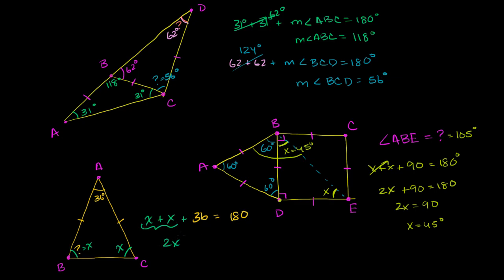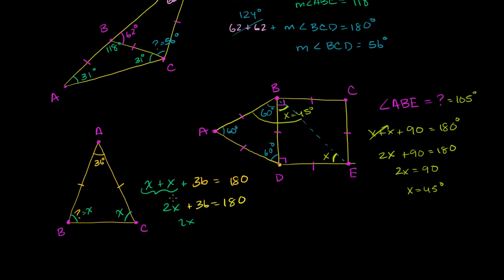So 2x plus 36 equals 180. Subtract 36 from both sides: 2x equals 144. 180 minus 30 is 150, then subtract another 6 gives 144. Divide both sides by 2 and x equals 72 degrees. So each base angle is equal to 72 degrees, and we are done.